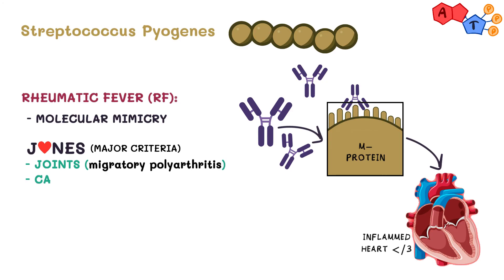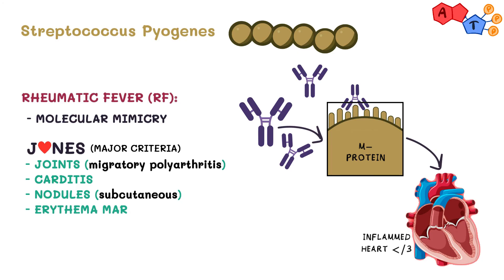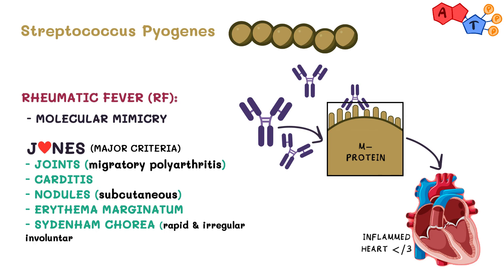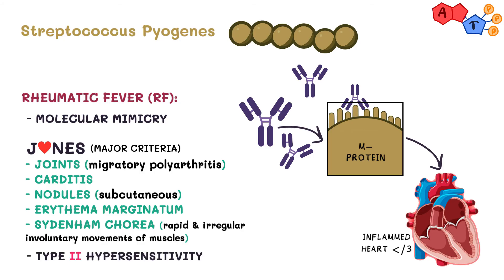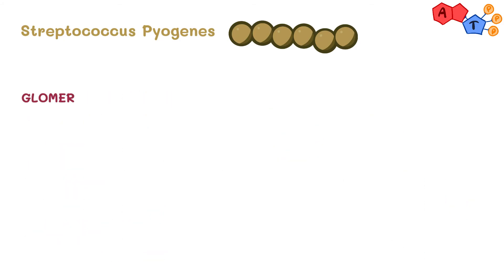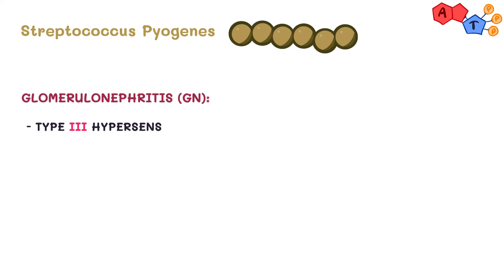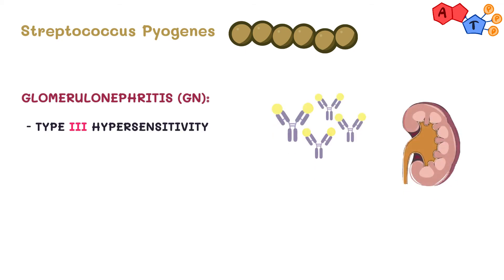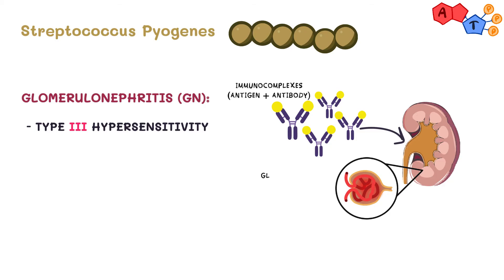Continuing with the Jones criteria: O, which is similar to a heart shape, stands for carditis. N for nodules in the skin, which are subcutaneous. E for erythema marginatum, which is an evanescent rash — meaning it disappears quickly — with a ring margin. And lastly, S for Sydenham's chorea. Since it's caused by antibodies attacking the heart directly, rheumatic fever is a type 2 hypersensitivity. Glomerulonephritis, on the other hand, is a type 3 hypersensitivity, wherein immune complexes result in an inflammatory response and glomerular damage.